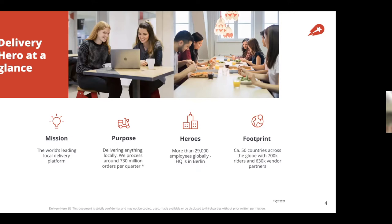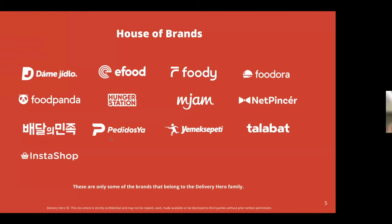Our organization and business model is distributed by default. We operate brands like Talabat in the Middle East, and Panda in Europe and Asia, and recently started operating in Berlin and Germany. This is just a subset of the brands we have — there are many more.